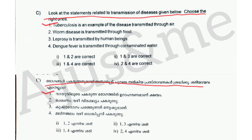Second: Worm disease is transmitted through food — worm disease is transmitted by human beings. That is correct. Third: Leprosy is transmitted by human beings.